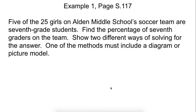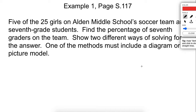So let's look at the first example. 25 of the girls at the Alden Middle School Soccer Team are 7th grade students. Find what percentage of the students of the 7th grade are on the team. We're going to start off with a diagram - a percent ruler. A percent ruler, no matter how you draw it, is basically a line that starts with zero and goes to 100%.